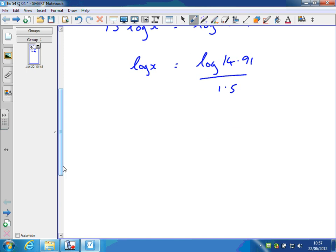So then log x equals whatever that is. Log 14.91 divided by 1.5 on the calculator comes to around about 0.7823.